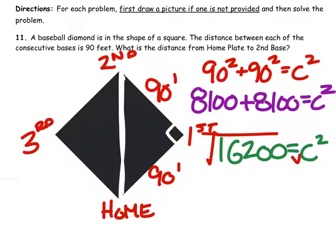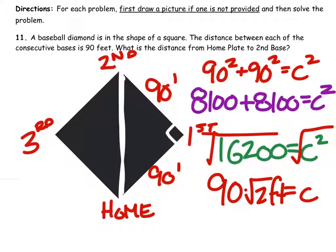And then finally, I will square root both of these so that I have just my hypotenuse. That's 90 times the square root of 2 in feet. But if we want to write the decimal for this, which is okay, then it would be approximately 127.28 feet.